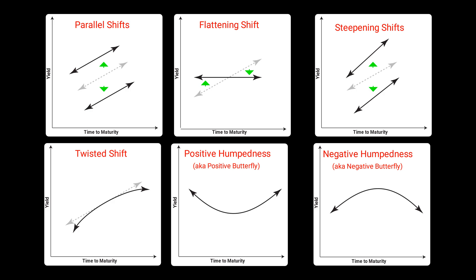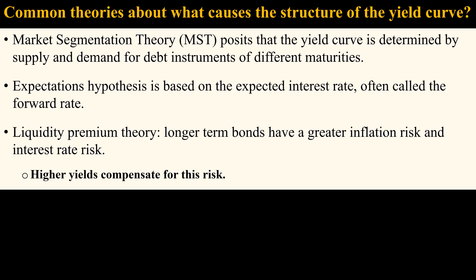A flat yield curve often occurs because a transition is occurring between a normal and an inverted yield curve, or vice versa. There are several textbook theories that attempt to explain the structure of the yield curve. I list them here, but I will not explain them in any depth, because I think there is a much better and simpler explanation, as I will explain later in this video.